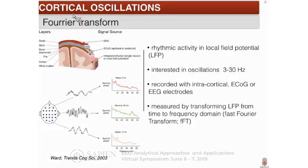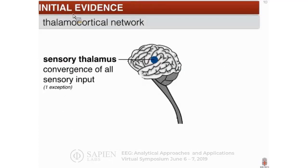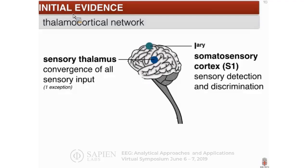One way we look at EEG is by applying a Fourier transform to plot the power distribution across frequency bands. One of the networks I'd like to focus on involves thalamus and cortex. Sensory thalamus is an area of convergence for all sensory input with the exception of one — if you know what that exception is, type it in and we'll address it during the Q&A. We know that primary somatosensory cortex receives information predominantly from sensory thalamus. There is a preconception that S1 is a pain center, which obviously is not the case.